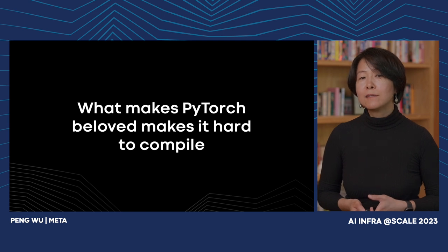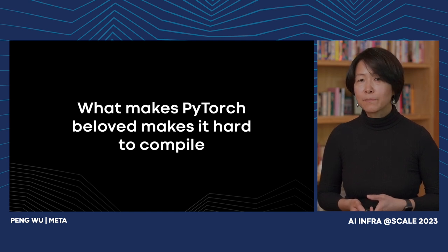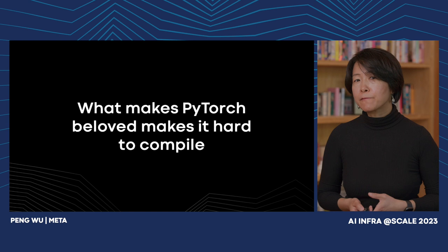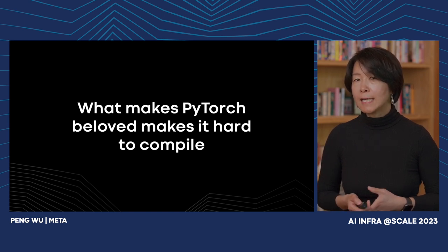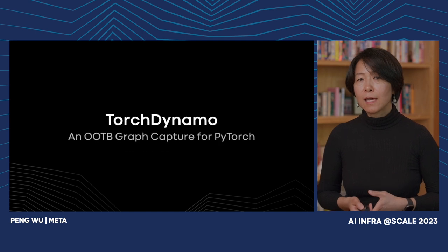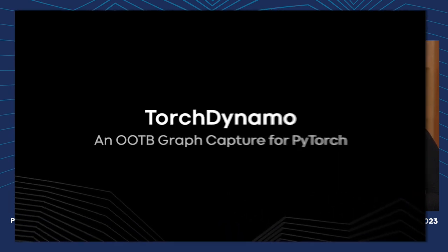You may wonder why we make such a fuss about PyTorch graph mode. It is because what made PyTorch beloved — its flexibility and dynamism — is exactly what made it hard to compile. The moment we figured out how to have graph mode while maintaining the ease of use API, we knew that a step function change was happening on PyTorch. And that moment is Torch Dynamo.